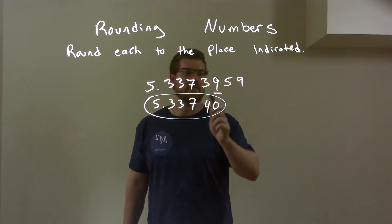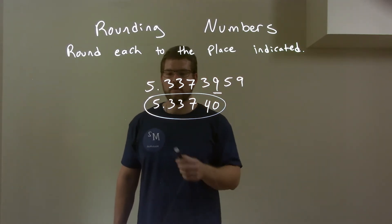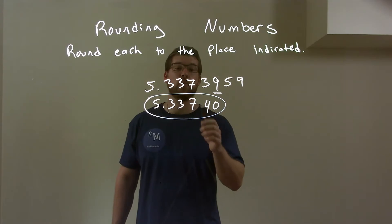Then we brought down everything on the left, left off the right-hand side, and so again, our rounded final answer is 5.33740. That's easy.